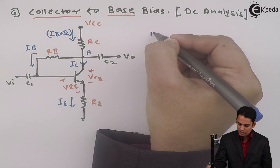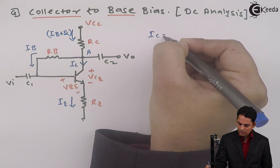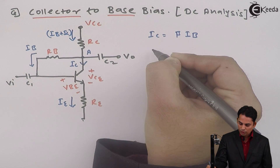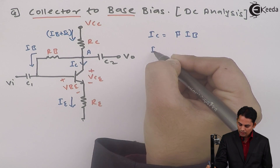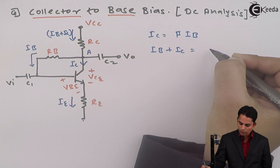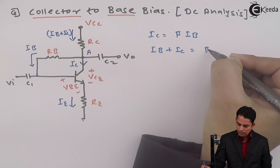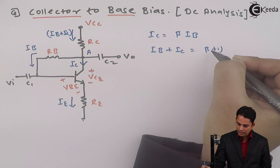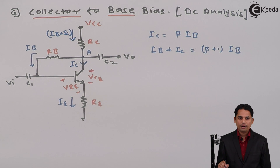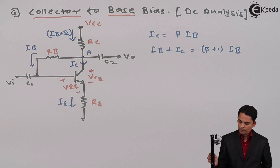We know that IC is equal to beta times IB. Similarly, IB plus IC is equal to beta plus 1 times IB. These two equations are very important and will be required for the further analysis.